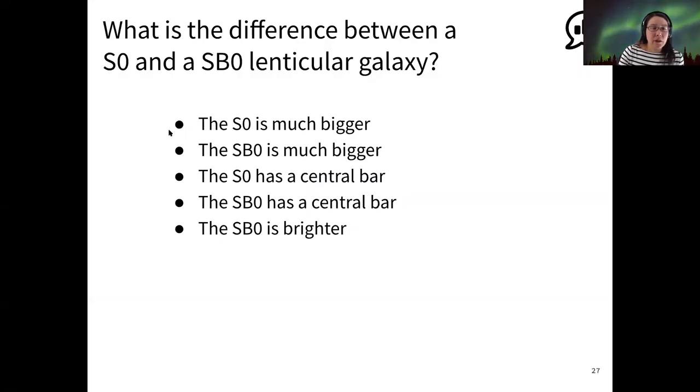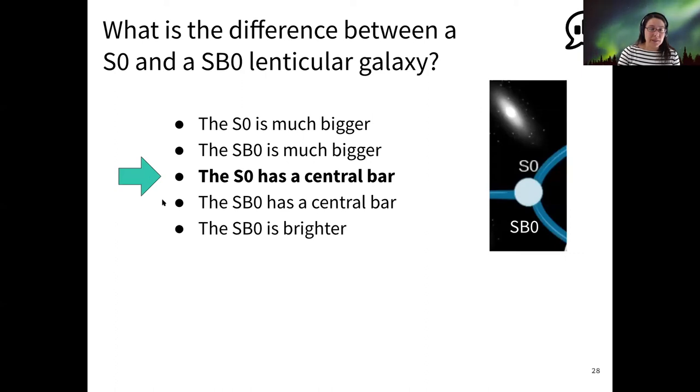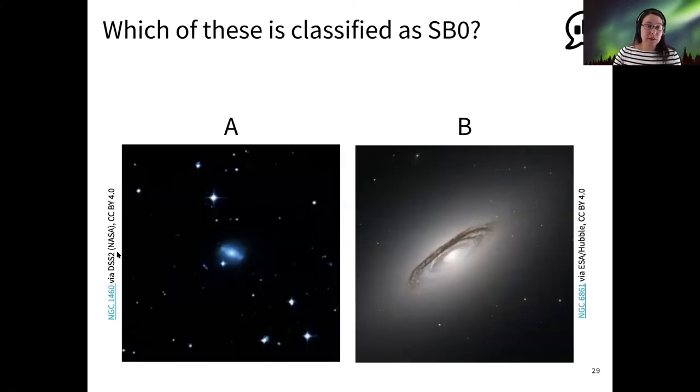So a question for you. All of my bullets became bullets instead of A, B, C, D, E. Sorry. So what do you think is the difference between an S0 and SB0 lenticular galaxy, if you had to guess? All right, I'm seeing the most votes for D, which is correct. The SB0 has a central bar. So remember that, oh sorry, that should be down here. The SB0 has a central bar. The S category is spiral, and the SB means barred spiral. So if there were a lenticular galaxy that was an SB0, then it would have an elongated bulge rather than a round bulge.